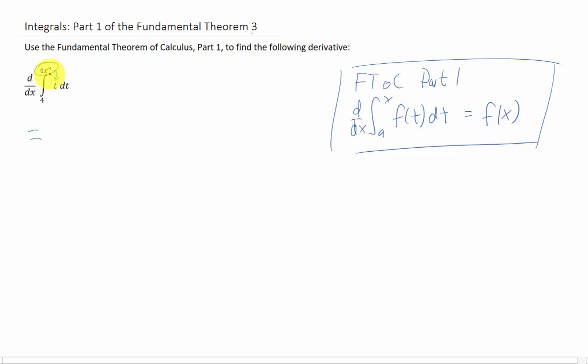So to take this derivative, really simply, we're just going to take this 4x cubed and we're going to plug it in here for t. And then we're going to multiply by the derivative of that function. The derivative of 4x cubed is 12x squared, and we end up getting 48x to the fifth.